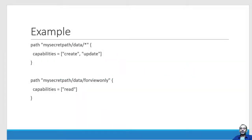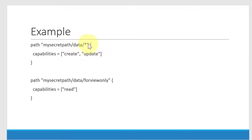Let us understand how to create a policy and attach a policy to a token. For understanding purposes, I am going to create a policy with the following rule: within the secret engine mySecretPath, I will allow the permissions create and update to all paths. And within mySecretPath, only for the path 'for_view_only', I will give only the capability read. So this is the policy I am going to create.